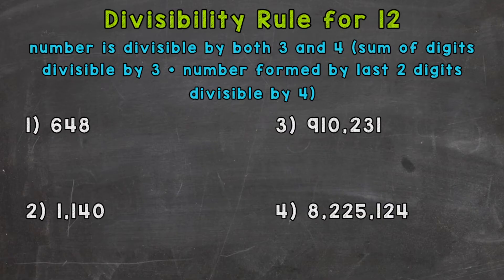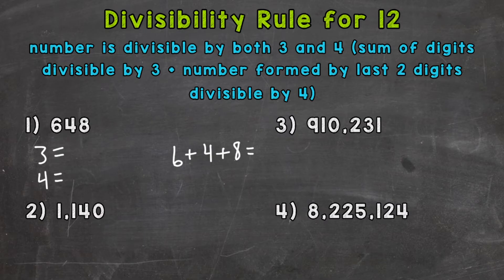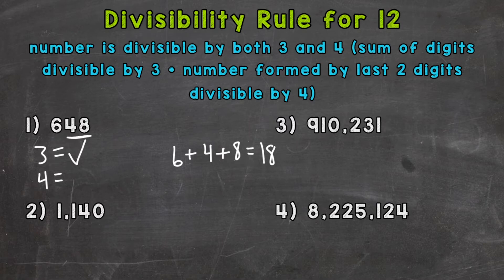Let's jump into number 1, where we have 648. We'll do 3 first, and then 4, and then that will tell us if it's divisible by 12. For 3, we find the sum of the digits: 6 plus 4 plus 8. 6 plus 4 is 10, plus 8 is 18. 18 is divisible by 3 — 18 divided by 3 equals 6 — so 648 is divisible by 3. Now for 4, we look at the last two digits: 48. 48 is divisible by 4 — 48 divided by 4 equals 12 — so 648 is divisible by both 3 and 4, therefore divisible by 12.